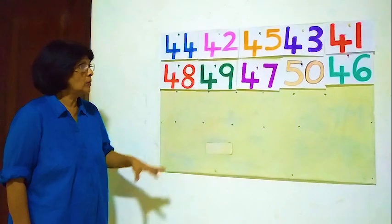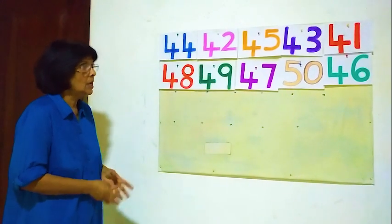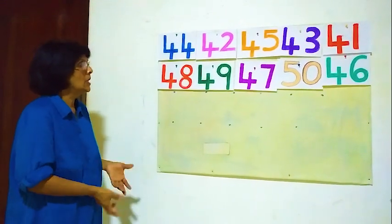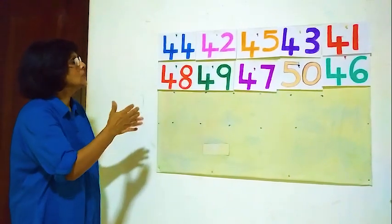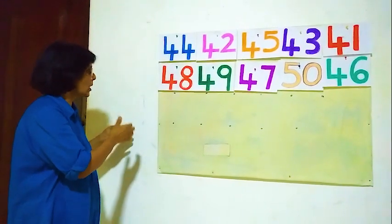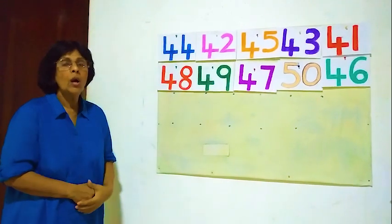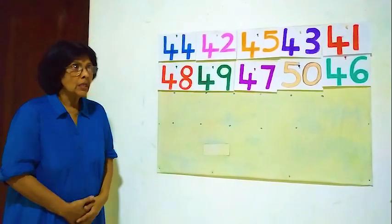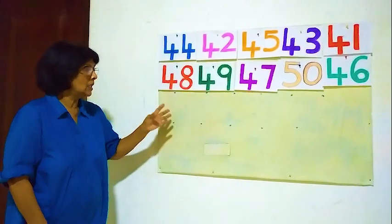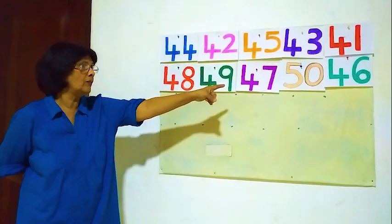What we have to do, we must find the smallest number and the biggest number and other numbers. We must start from the smaller one to the biggest one and put them in order. The order here is 41 to 50.